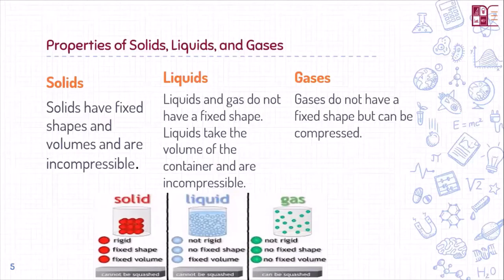Even if there are different shapes of container, the volume of the liquid remains the same. Gases are not rigid at all — the gas molecules are always roaming around in the atmosphere, they do not have a fixed shape and they do not have a fixed volume. On application of pressure, the gas molecules can be compressed, but for solids and liquids, this is not applicable.